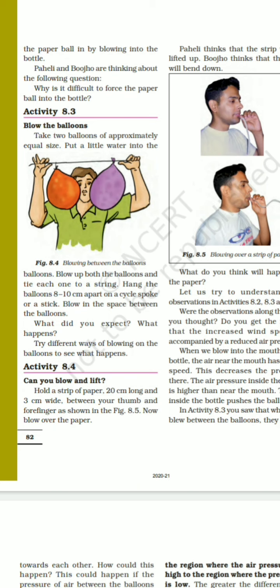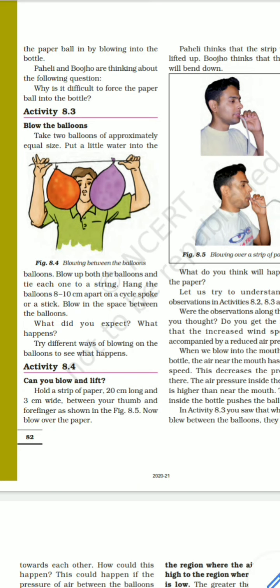In Activity 8.3, blow up two balloons to approximately equal size, put a little water into each balloon, and tie each one onto a string. Hang the balloons 8 to 10 cm apart on a cycle spoke or stick. Blow in the space between the balloons and observe what happens. Try different ways of blowing to see what happens.